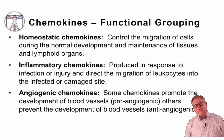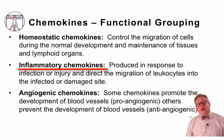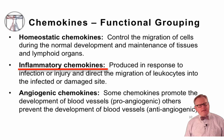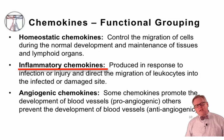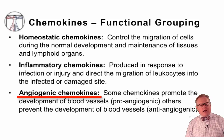The same functional grouping applies to chemokines, with three major groups. First, homeostatic chemokines control the migration of cells during normal development and maintenance of the immune system. Second, inflammatory chemokines are produced in response to infection or injury and direct the migration of leukocytes into infected or damaged tissues — these are not typically made at baseline but are induced by infection or tissue damage. Third, angiogenic chemokines either promote or prevent the growth of blood vessels, called proangiogenic and anti-angiogenic chemokines, respectively.